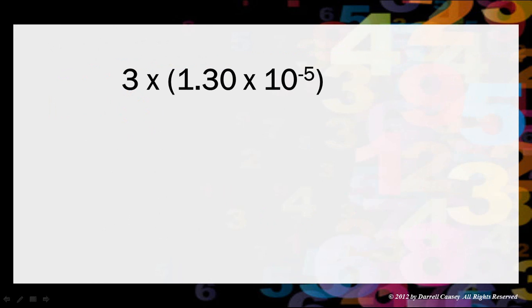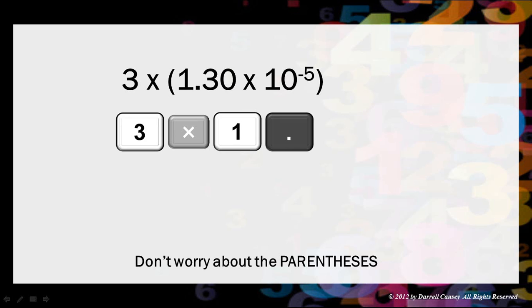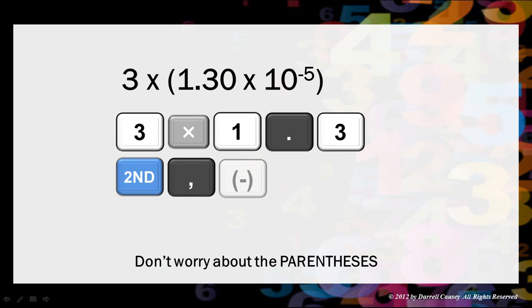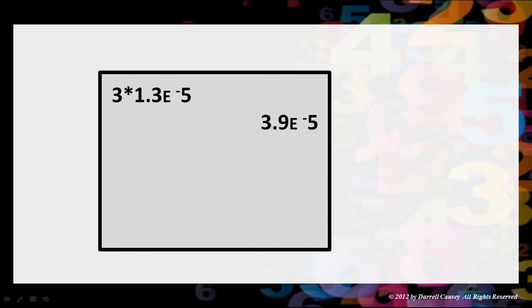How would I enter 3 times the quantity 1.30 times 10 to the negative 5th? 3 times 1, decimal, 3, second key, comma, that's the times 10, negative 5. Now pay attention to that. Notice I did not have to use the parentheses. The calculator knows that we are doing scientific notation and will account for that. Hit enter. And that's what you should have on your screen.